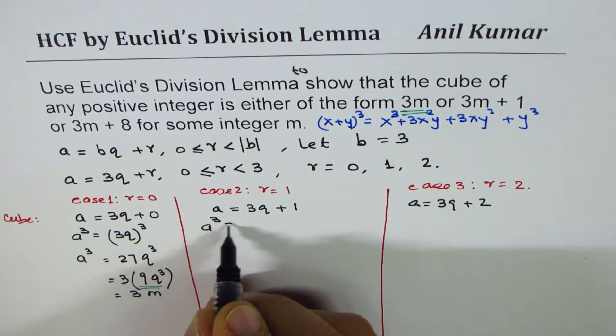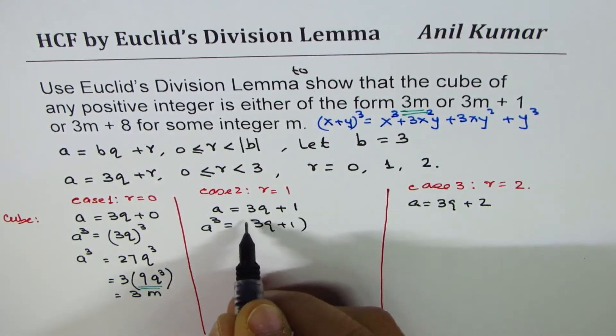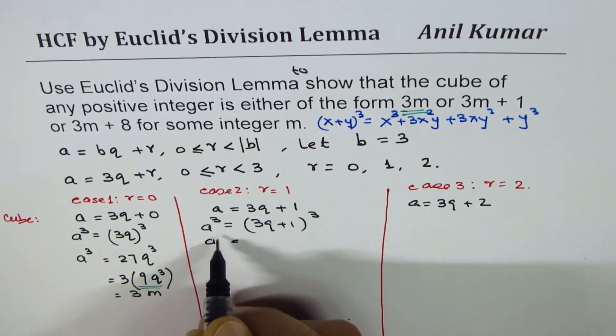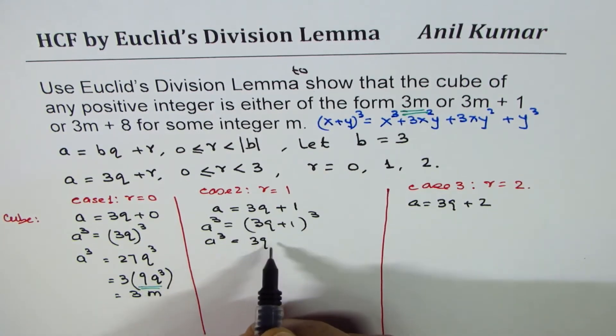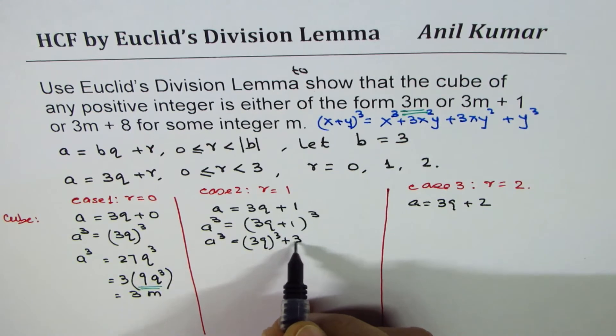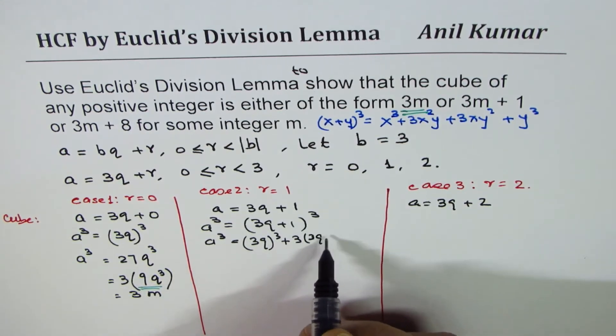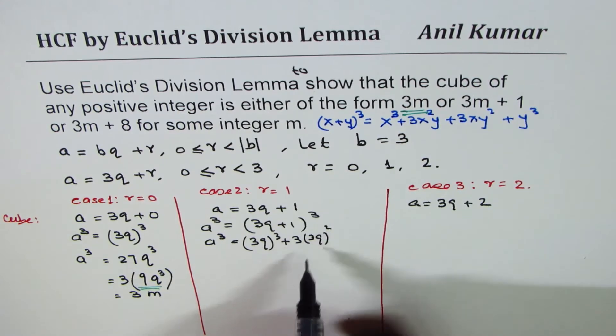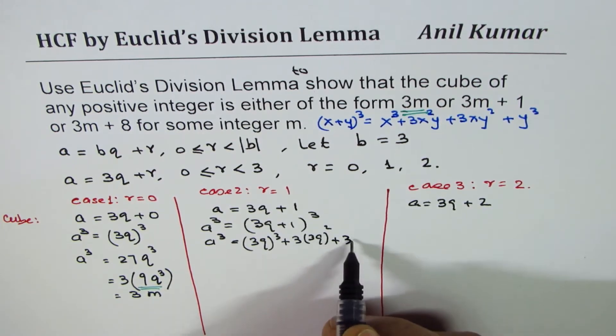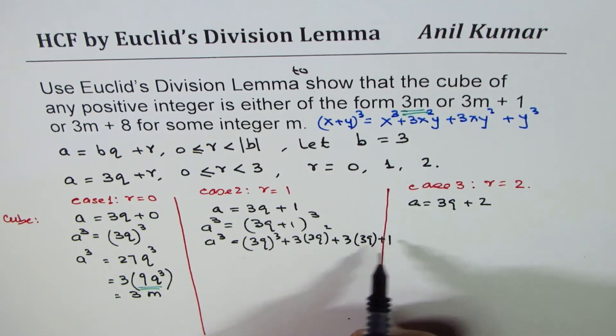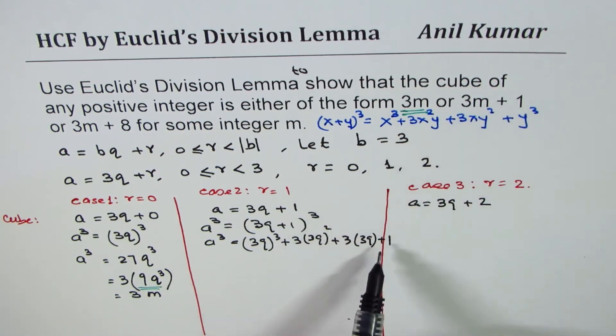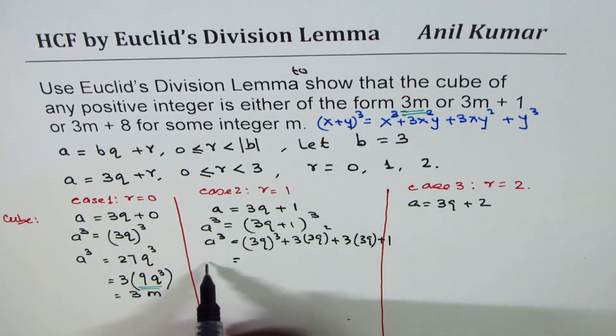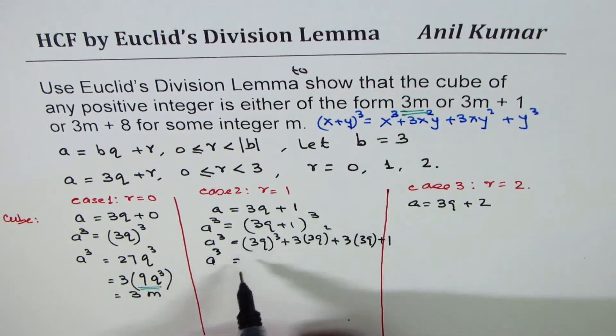Now let us cube it. So we get A cube equals to 3Q plus 1 whole cube. A cube is equal to, when you expand, X cube means 3Q whole cube plus 3 times square of 3Q, 1 times anything is 1 so I'm not writing that, plus 3 times 3Q and plus 1 cube which is 1. Now we'll prove that this is equal to 3 times M plus 1, so I'll keep this one aside and I can factor 3 out of all of them.